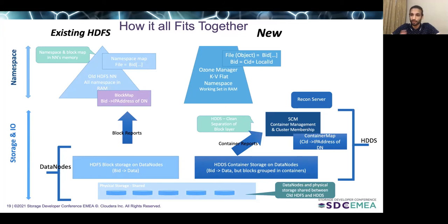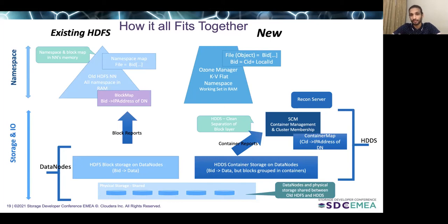Ozone also has a Recon server, which is a reconciliation service similar to what FSCK does in HDFS. An admin can access the Recon server to understand the missing replicas in an Ozone cluster and to know if there are files which are corrupted. Regarding scale, HDFS has been known to achieve a scale of 300 to 400 million files, and beyond that it is very difficult for the name node to maintain the namespace in memory. The name node sees a lot of GC pressure beyond 400 million files, whereas Ozone has been tested with around 10 billion objects.